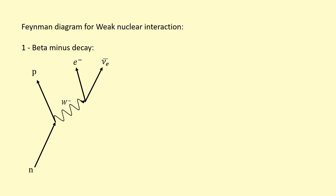Sometimes you may be asked to represent this in terms of quarks instead. We know the neutron is made out of up, down, down, and the proton is made out of up, down, up. What's going on really during beta-minus decay is the down quark is turning into an up quark, and everything else is staying the same.